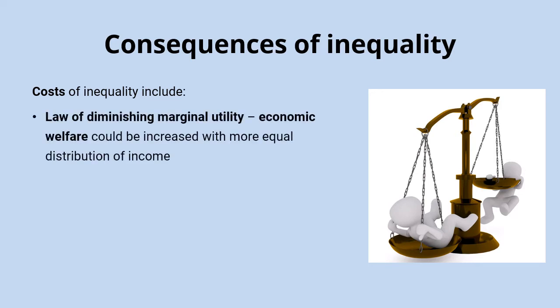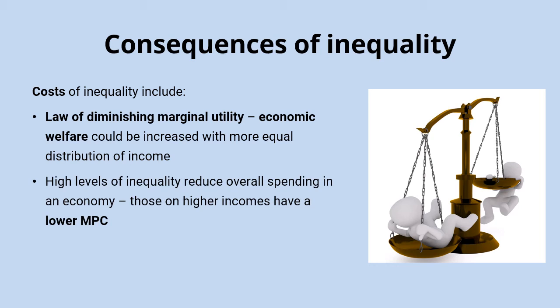One really great concept to use when talking about that is the law of diminishing marginal utility. This means that economic welfare could actually be increased with a more equal distribution of income. If you think about billionaires — people who earn huge amounts of money — they've got so much money they almost don't know what to do with it. Giving a billionaire an extra £10,000 they'd probably hardly notice, whereas giving that to one of the poorest in society would make an absolute world of difference.